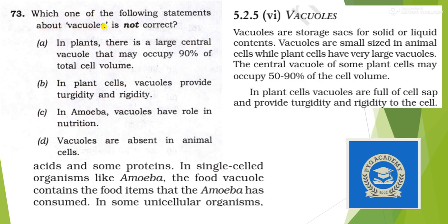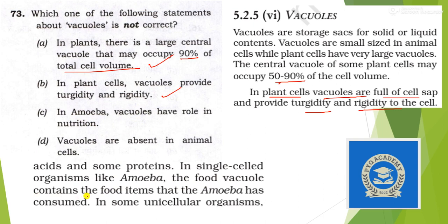Next: which one of the following statements about vacuoles is not correct? Statement one: in plants there is a large central vacuole that may occupy 90% of total cell volume — true, it may occupy 50 to 90%. Statement two: in plant cells vacuoles provide turgidity and rigidity — also true. Statement three: in amoeba vacuoles have a role in nutrition — true, the food vacuole contains food the amoeba has consumed. Statement four: vacuoles are absent in animal cells — no, they are not absent, rather they are very small in size. So this is wrong and the answer is option B.